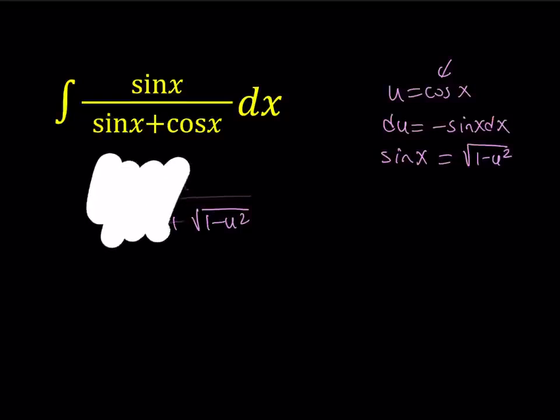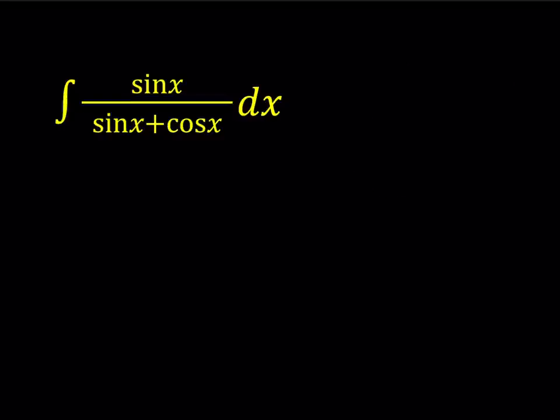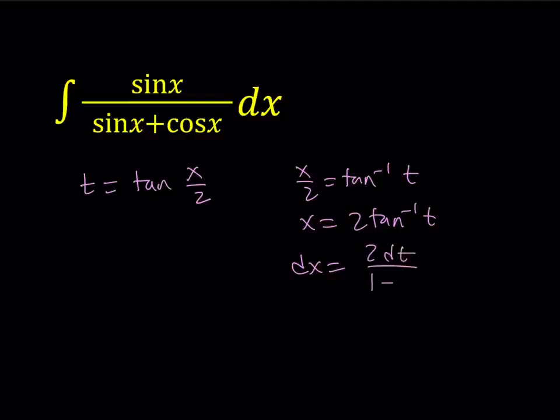So let's go ahead and use different approaches. Another approach might be to use the Weierstrass substitution. That is usually used with integrals of this kind where you have a function of sine x and cosine x, especially with rational expressions like this one. It will be helpful. So we start by calling t equals tangent x over 2, and then from here we can evaluate x over 2 as tan inverse of t, and then multiply both sides by 2, and then from here we can find the dx as 2 dt over 1 plus t squared.